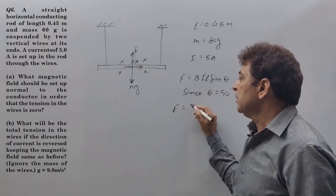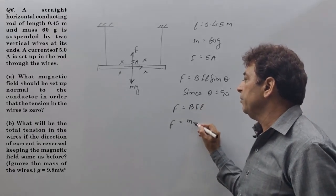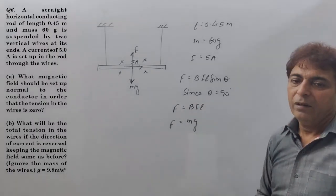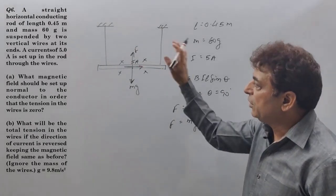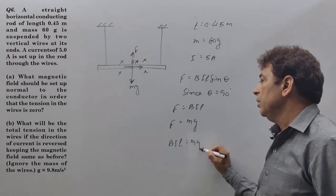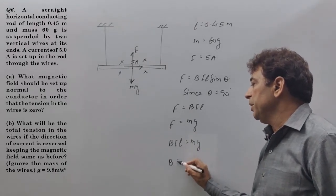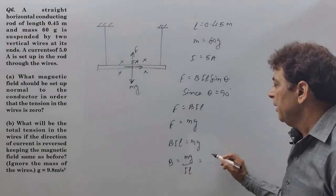Now this force BIL must balance the weight and if it can balance the weight, then tension is zero. Means BIL must be equal to MG. So B will be equal to MG by IL.